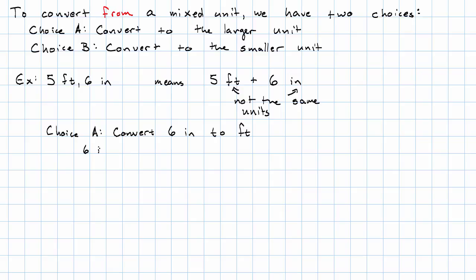So we'll say 6 inches over 1 times the conversion factor where we're getting rid of inches and bringing in feet. 12 inches is 1 foot. Inches cancel out. Now we multiply 6 over 12 feet. 6 over 12, we can simplify that to a half foot or if we like decimals better, we can say 0.5 feet. Now we can add them together. 5 feet plus 1 half foot is 5 and a half feet.